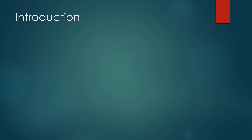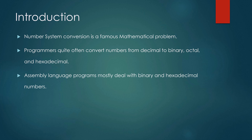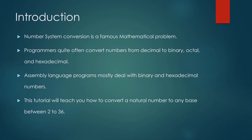Introduction of the problem. Number system conversion is a famous mathematical problem. Programmers quite often convert numbers from decimal to binary, octal, and hexadecimal and vice versa. Assembly language programs mostly deal with binary and hexadecimal numbers. This tutorial will teach you how you can convert a natural number to any base between 2 to 36.